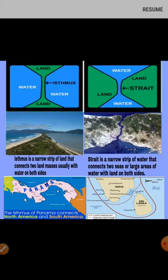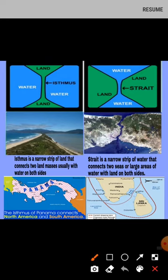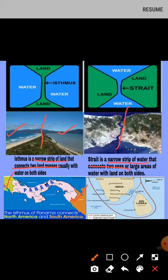Difference between Isthmus and Strait. An isthmus is a narrow strip of land that connects two land masses — for example, it connects the continents of North America and South America — and it has water bodies on both sides. A strait, on the other hand, is a narrow strip of water that connects two seas or large areas of water, and it has land on both sides.